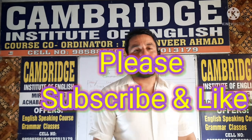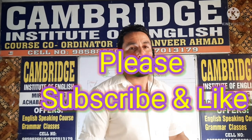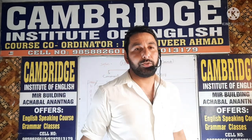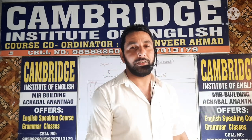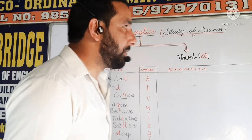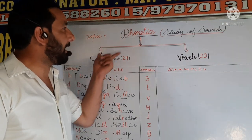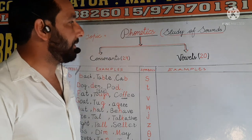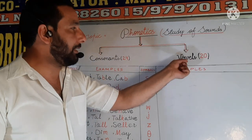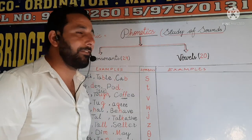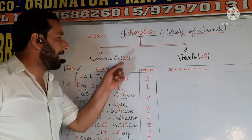Assalamu alaikum wa rahmatullahi wa barakatuhu. Dear friends, you are most welcome in my YouTube English Learning Channel. Let's in this video talk about the consonants that we have in phonetics. As we have earlier talked about the vowel sounds, these are 20 in number. The consonants are 24 in number.